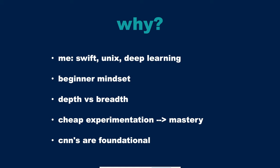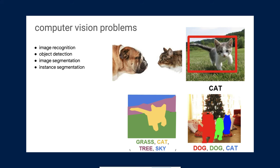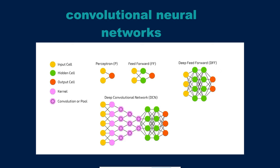Convolutional neural networks are a really good foundational technique. People learn them and then jump to other things, but the more I've studied CNNs, the more other techniques like reinforcement learning and NLP become easier to understand. These are the four traditional areas of computer vision, and we're going to focus on image recognition — basically just deciding whether something is a cat or a dog picture. I think there's a lot that can be unpacked in this problem.